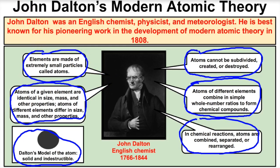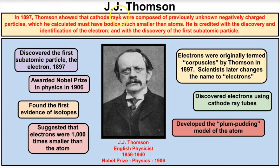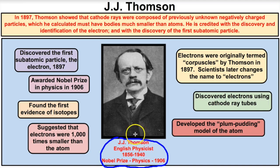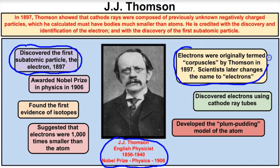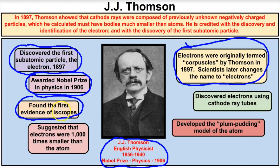Let's fast forward about 90 years and talk about J.J. Thompson — an English physicist who lived between 1856 and 1940. He wins the Nobel Prize in Physics in 1906 for his discovery of the electron. J.J. Thompson discovers the very first subatomic particle — the electron — in 1897. However, in 1897 they're called corpuscles; it's not until about 1921 that another scientist names them electrons. He also found the very first evidence of isotopes' existence, and he suggested that electrons were about a thousand times smaller than atoms.